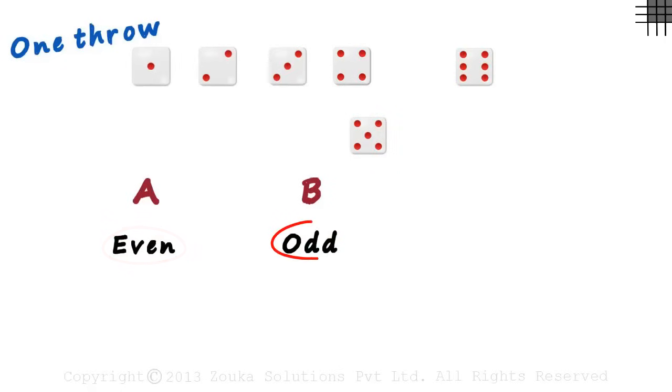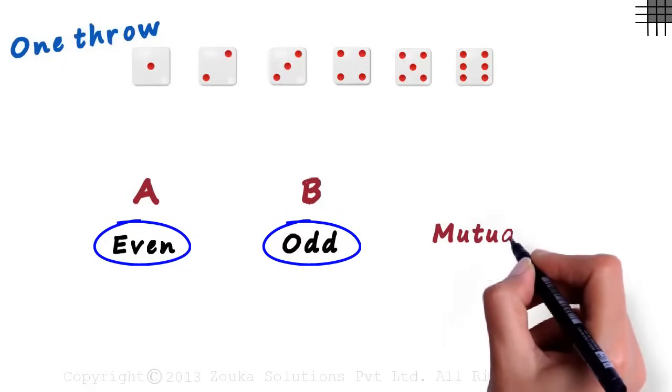This means that if we get an odd number, we know that it is not even. And if we get an even number, it cannot be odd. These two events cannot occur together and are hence mutually exclusive events.